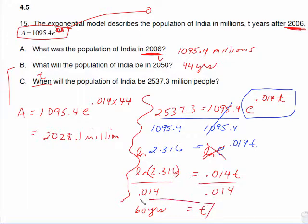Now, that means the population will be 2,537 million people after 60 years. When it asks you when, it's really looking for the year. So this means 60 years after the year 2006, so do 2006 plus 60. It says in the year 2066 is when we expect that population to grow to that number right there.